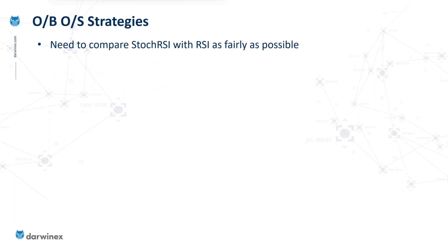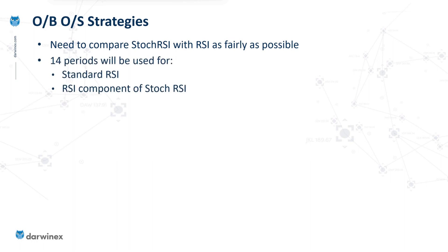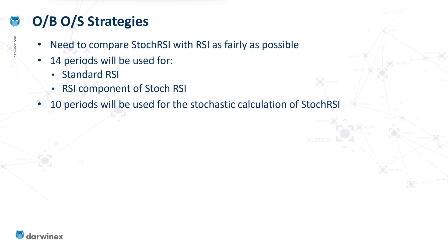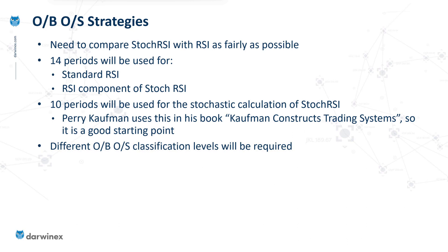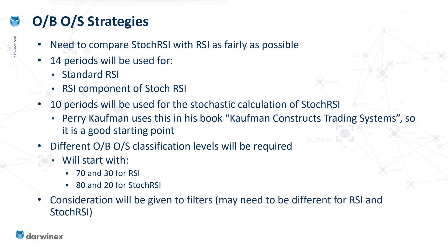In summary, we need to make sure that we're comparing the stochastic RSI with the RSI in as fair a way as possible so as not to bias our results. When we can keep things consistent between the two, then I will — for example, the 14 periods for the RSI calculations. For the number of periods of the stochastic calculation, I'm going to use a value of 10, predominantly because this is what Perry Kaufman suggests in his book, so it seems like a good starting point. But when it doesn't make sense to have the same values between the two indicators, we will be changing those — an example being the threshold levels for overbought and oversold classification. There might also have to be differences in the use of filters based on the individual characteristics of the two indicators.